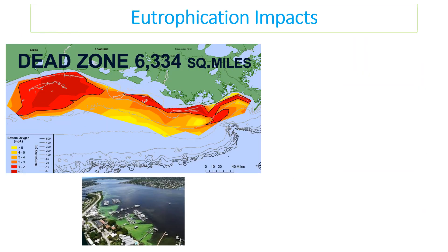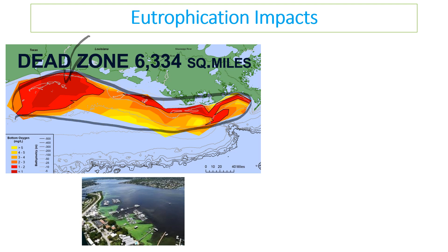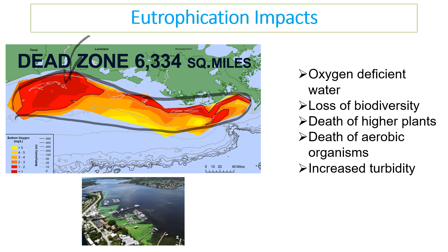Eutrophication has massive impacts — here is an example from America. Water coming out of the rivers in Louisiana brings minerals into the Gulf of Mexico, causing a huge algal bloom and creating a 'dead zone' due to lack of oxygen. You can see the size of this dead zone is absolutely massive. Because of oxygen-deficient water, biodiversity is lost: higher plants can't survive because they're blocked out, aerobic organisms die, and there is increased turbidity in the water.